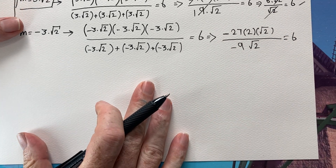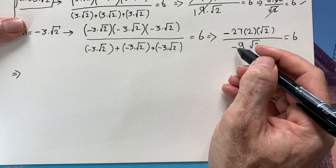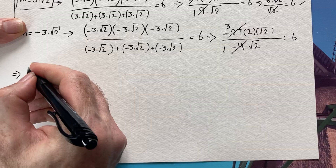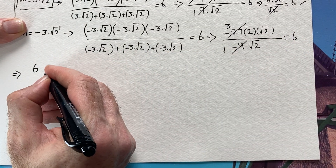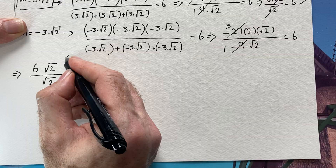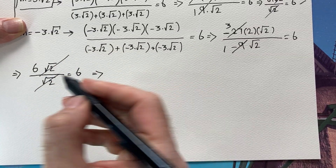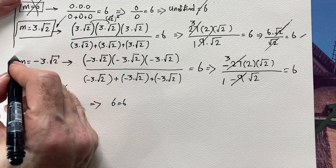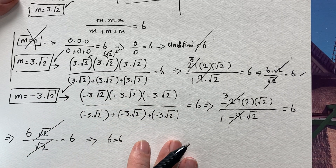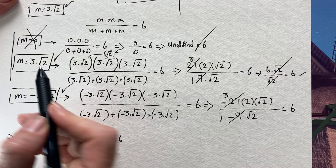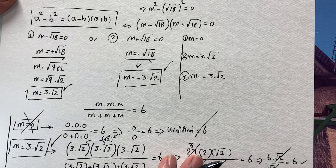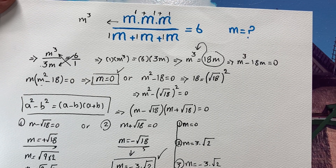Dividing: negative 27 divided by negative 9 is 3. Three times 2 equals 6. The √2 on the numerator and denominator cancel off, giving 6 equals 6. So m equals negative 3√2 is also a valid answer. Our equation has two valid answers: m equals 3√2 and m equals negative 3√2. If you use a different way to solve this question, please let me know — it always makes me happy to see how creative you can be!